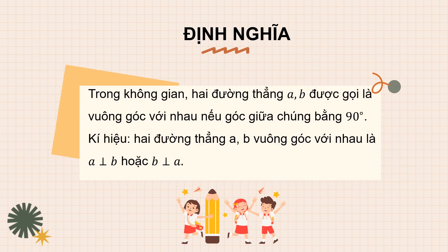Định nghĩa: trong không gian, 2 đường thẳng A và B được gọi là vuông góc với nhau nếu góc giữa chúng bằng 90 độ. Ký hiệu 2 đường thẳng vuông góc là A vuông góc B hoặc B vuông góc A.